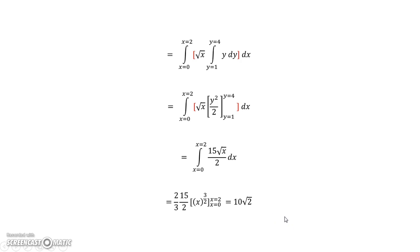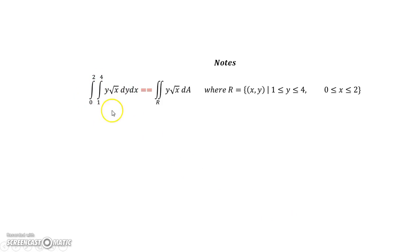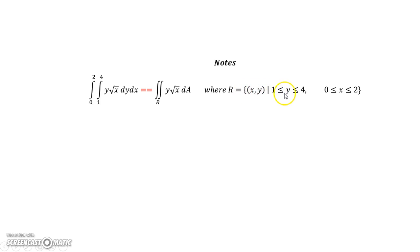Let's take a couple of notes. This question is equivalent to saying: find the integral of the function over the region R, where R is the set of points (x, y) with y between 1 and 4, and x between 0 and 2. If you're given a question in that form, you put those bounds into the limits of the integral, and dA becomes dy dx when working in Cartesian coordinates.